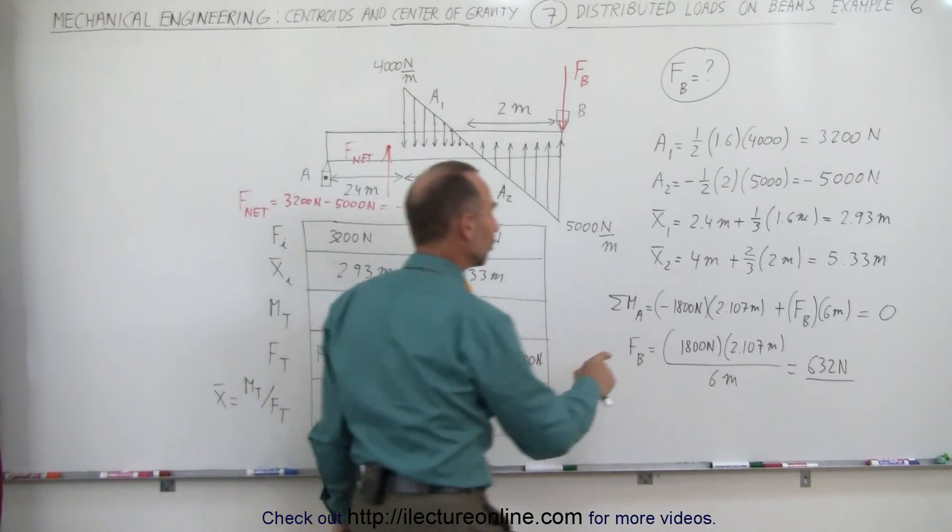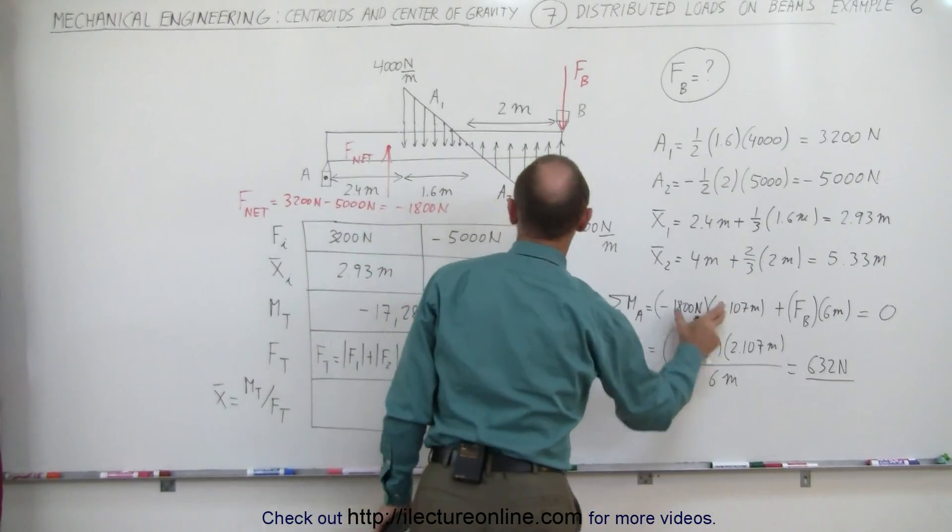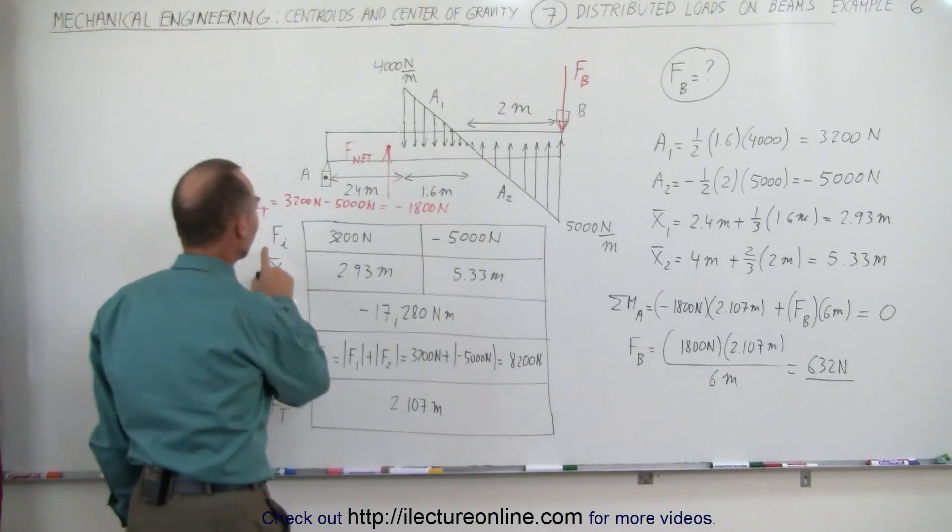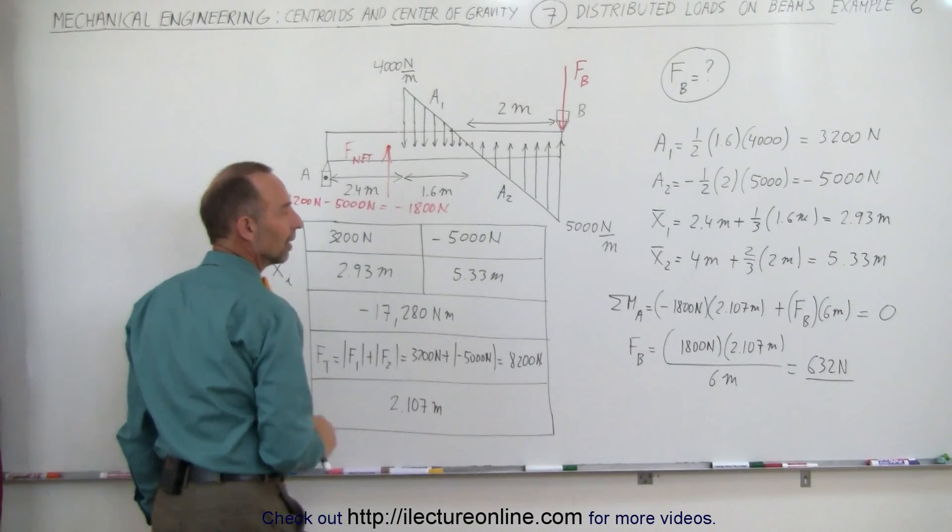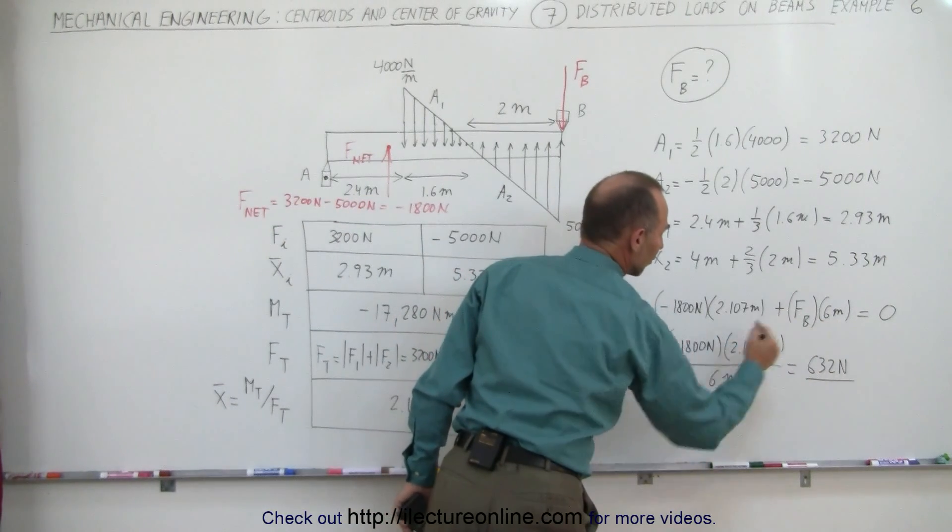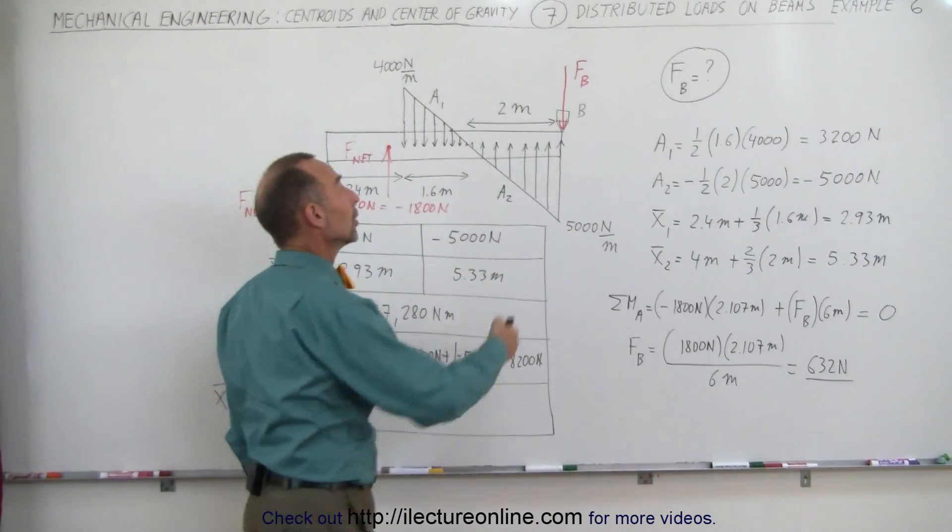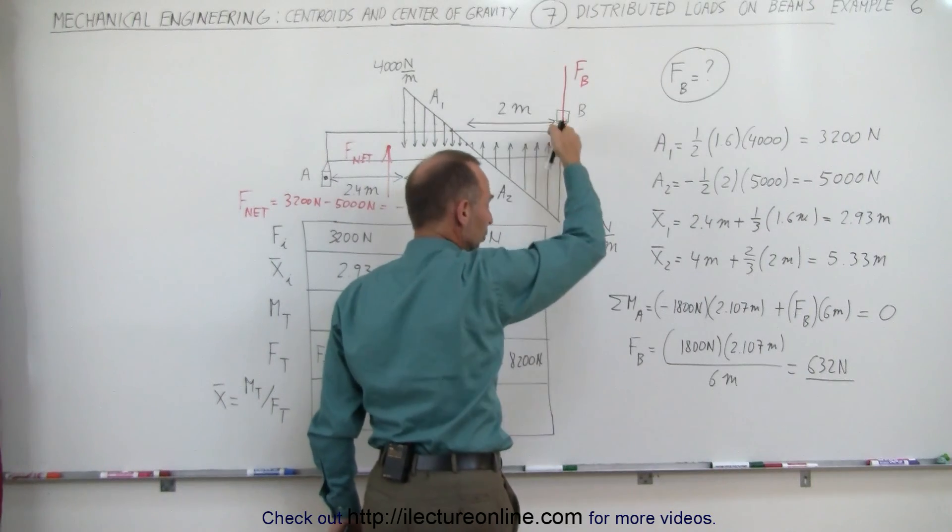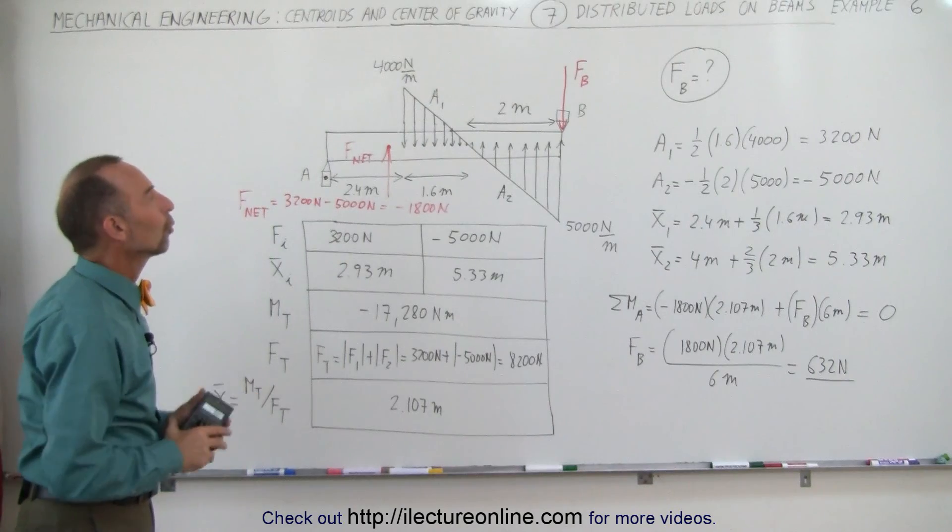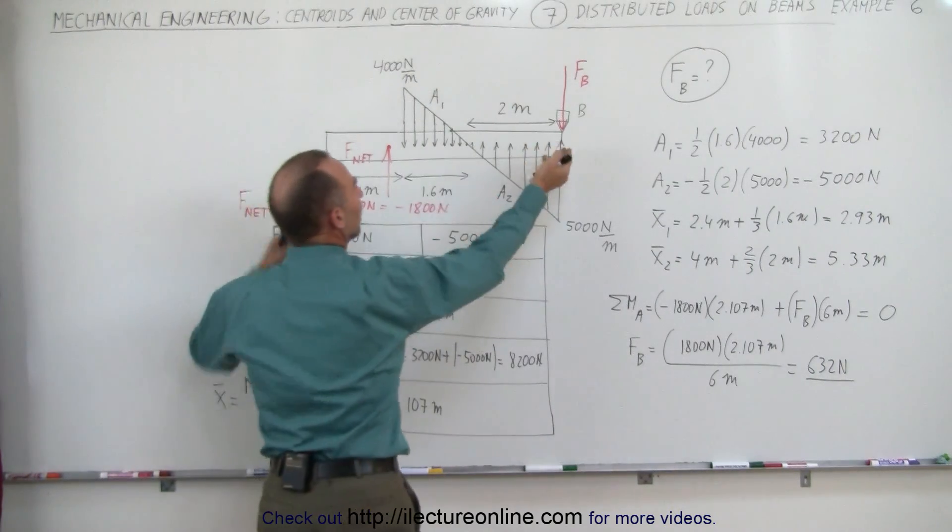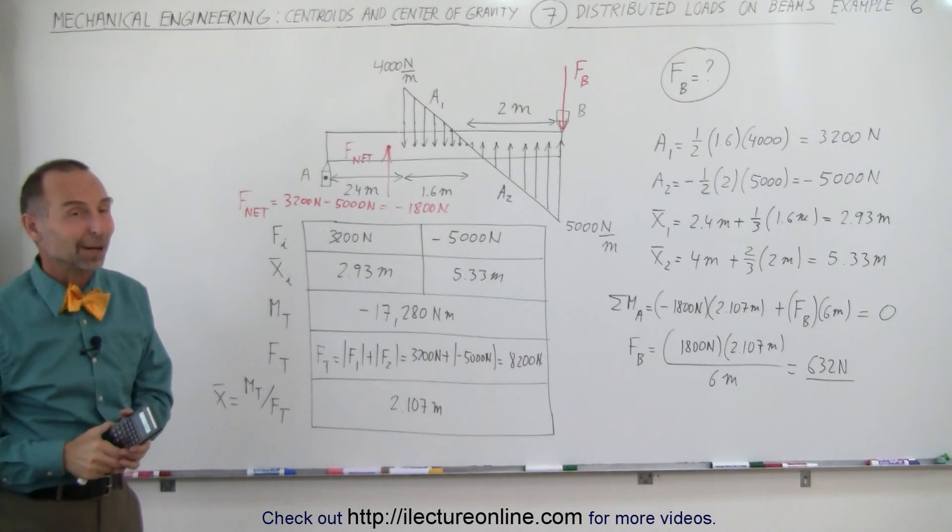Finally then, to find the force at B, we sum up all the moments relative to point A. We have the moment caused by the total net force, which is 1,800 newtons pushing in this direction at a distance of 2.107 meters, plus the force at B at 6 meters. Solve for the force at B: 632 newtons. The sign is not important, as long as you realize that the beam must be pushing in a downward direction in order to represent the restoring force. This is the reactionary force that keeps the beam from tipping in this direction, caused by the distributed load. And that's how we do that problem.